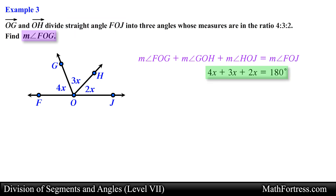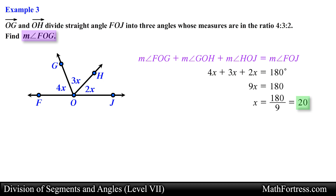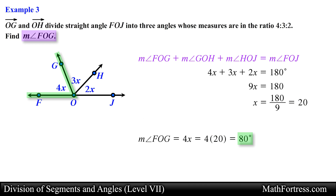With this equation we solve for x by collecting like terms and dividing both sides by 9, obtaining x equals 20. We then substitute x into the algebraic expression for angle FOG, simplifying to get 80 degrees as the final answer. In our final video in this series we will go over two challenging examples involving angle bisectors and angle trisectors.